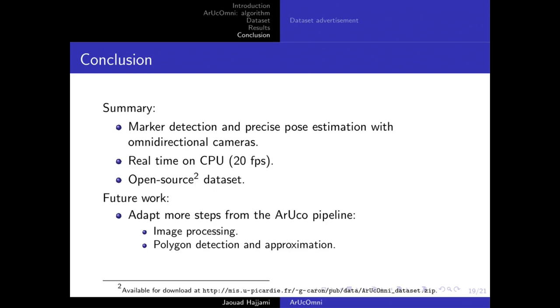After this work, we want to extend ArUco Omni to adapt more steps from the ArUco pipeline, in particular the image processing, mainly the thresholding, and also polygon extraction, because of the curvature of the markers. All those steps currently treat panoramic images with uniform resolution, and that's not adapted to the curvature of objects on panoramic images. With this adaptation, we expect to increase even more both detection rates and pose precision.